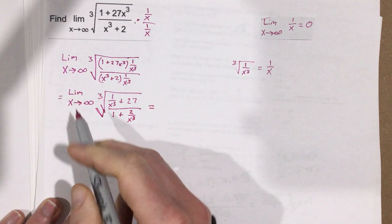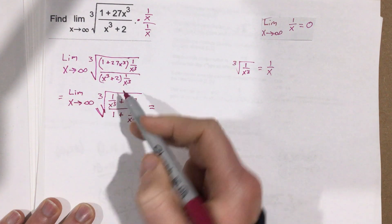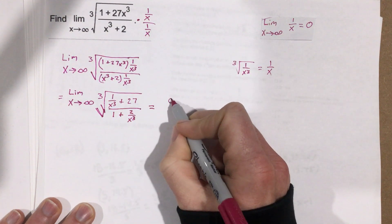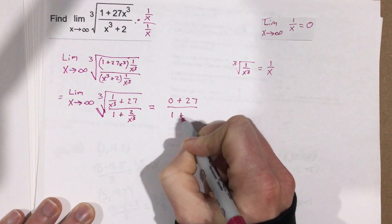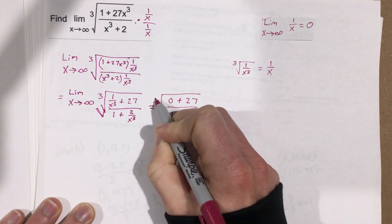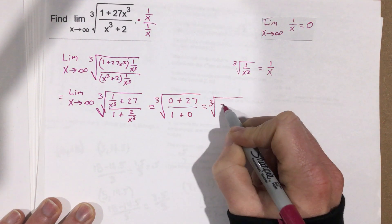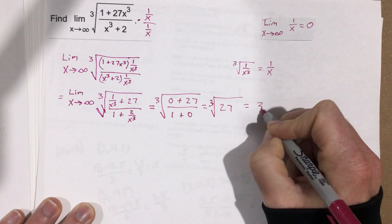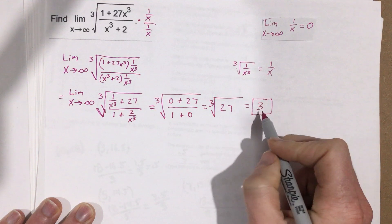When we throw the limit as x approaches infinity inside and evaluate, the 1 over x cubed term goes to 0, giving us just 27 in the numerator. In the denominator, the 2 over x cubed also goes to 0, leaving 1. So we end up with the cube root of 27 over 1, and the cube root of 27 is 3. The limit as x approaches infinity for this cube root is 3.